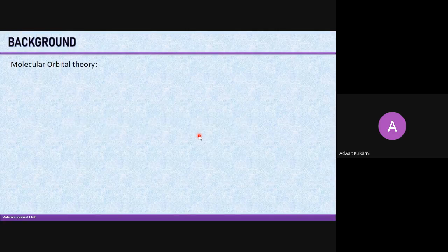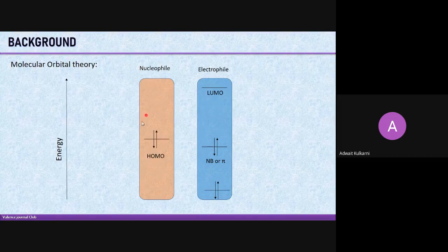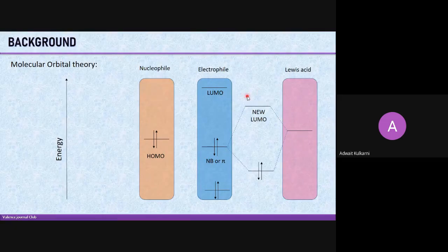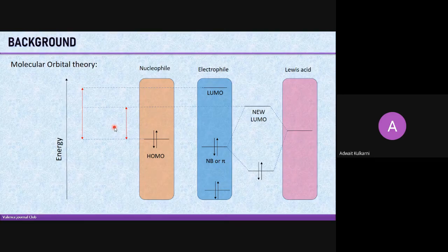Explaining Lewis acid catalysis using molecular orbital theory: an electrophile needs electrons and a nucleophile donates them, but the HOMO-LUMO gap can be very high, making the reaction unfavorable. A Lewis acid, which has an empty orbital, coordinates with the electrophile, lowering the LUMO of the combined molecule. This reduces the HOMO-LUMO gap, making the reaction more favorable. This is also known as LUMO-lowering catalysis.